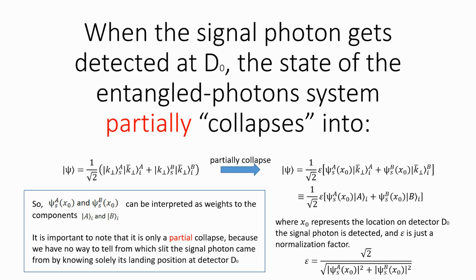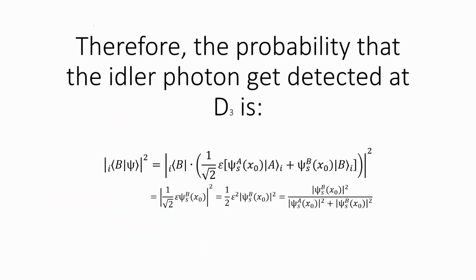Therefore, the which path information has not leaked out yet. Using this result, the probability that the idler photon get detected at detector D3 is therefore...